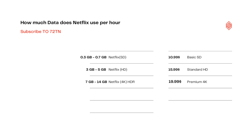The HD pack is called Standard, and Standard will allow you to watch anything up to 1080p. That can use up to 3 to 5 gig per hour, so it's getting up there. If you're going to limit the data you're fine, but that will be your Standard pack.